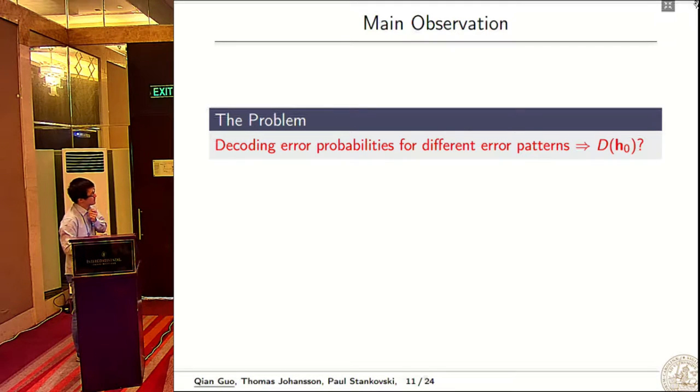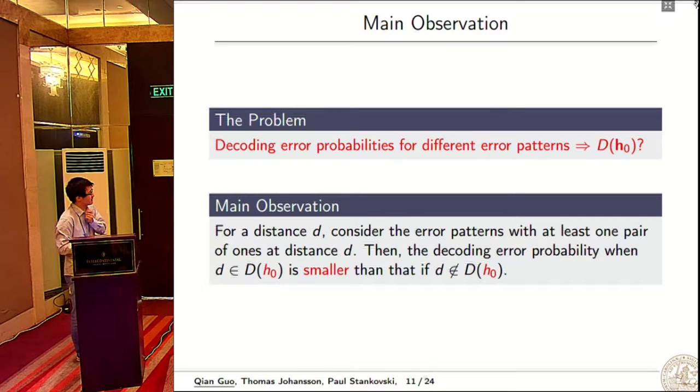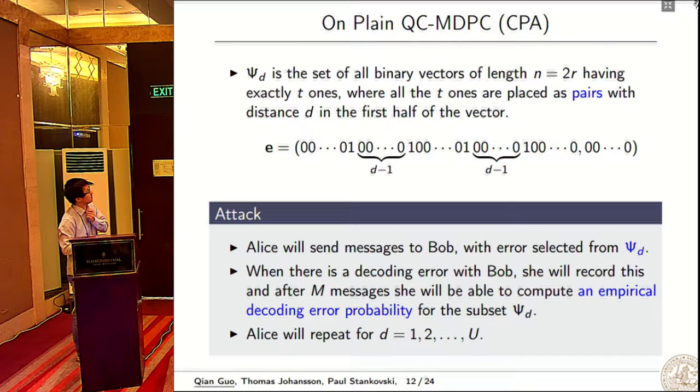The remaining problem is how to recover the distance spectrum from the decoding error probability for different error patterns. We have an observation that if d is in the distance spectrum, then the decoding error probability is smaller than if d is not in the distance spectrum.